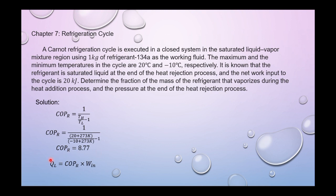Next, to find QL, QL equals COP times net work input. QL equals 8.77 times 20 kJ. Simplifying, our QL equals 175.4 kJ.